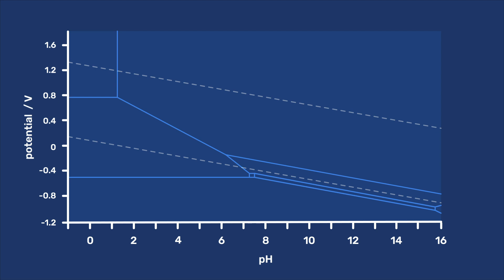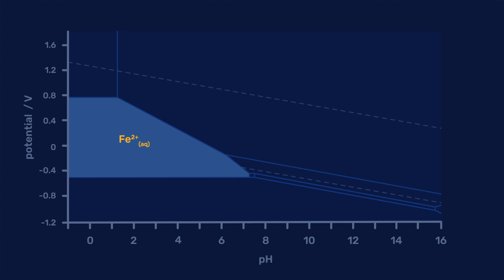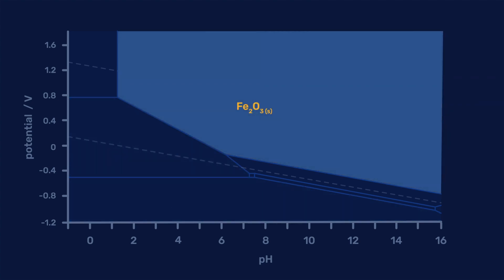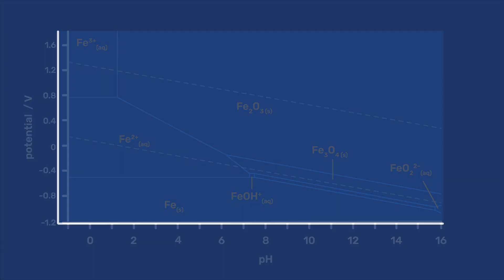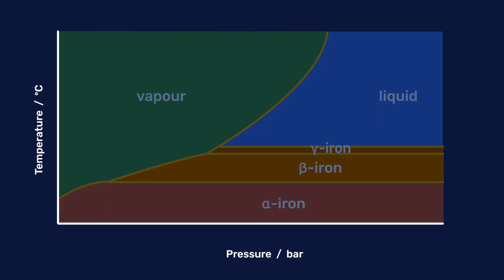Let's take the Pourbaix diagram of iron as an example. The different areas of this diagram indicate the stable state in which iron is found, including, for example, iron 3 plus in solution, iron 2 plus in solution, metallic iron, and iron 3 oxide. You can therefore think of a Pourbaix diagram as a phase diagram in which, instead of pressure and temperature, the axes are potential and pH.